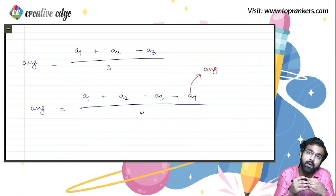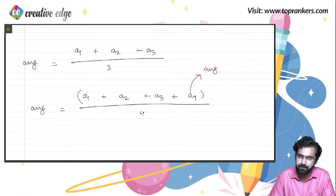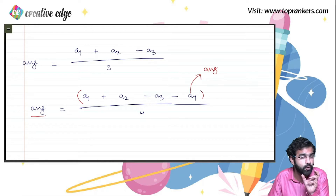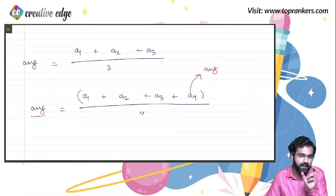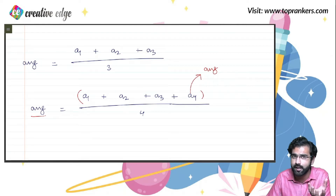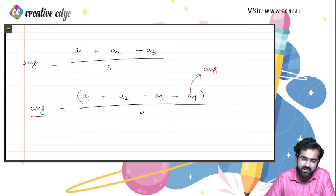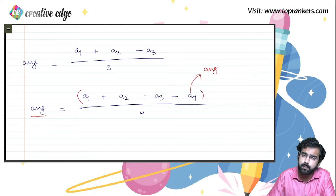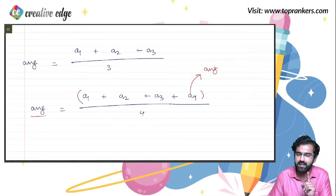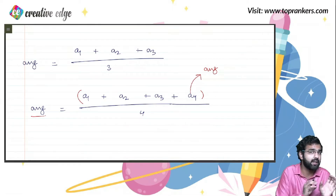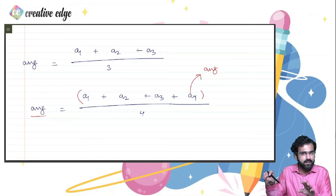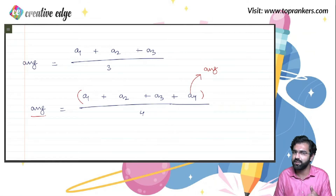The same principle applies to both addition and removal. If you add an observation equal to the existing average, the average remains the same. If you remove an observation equal to the existing average, the average still remains unchanged. This is a key property you need to understand.